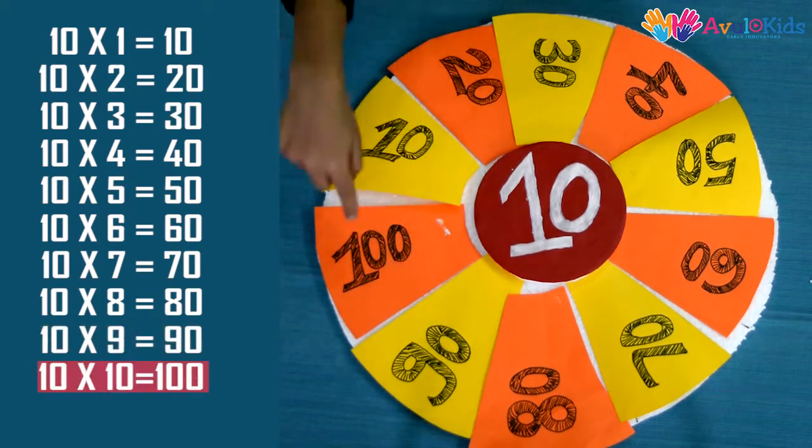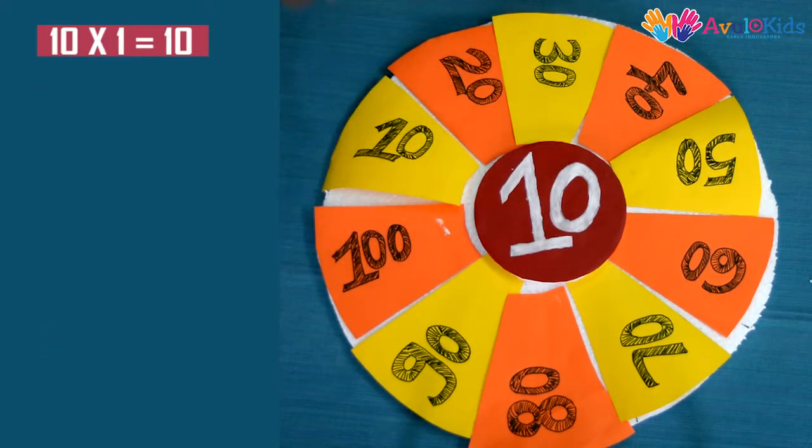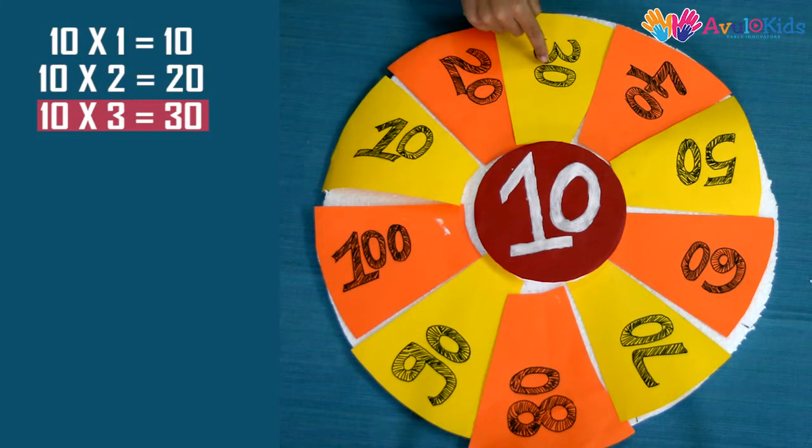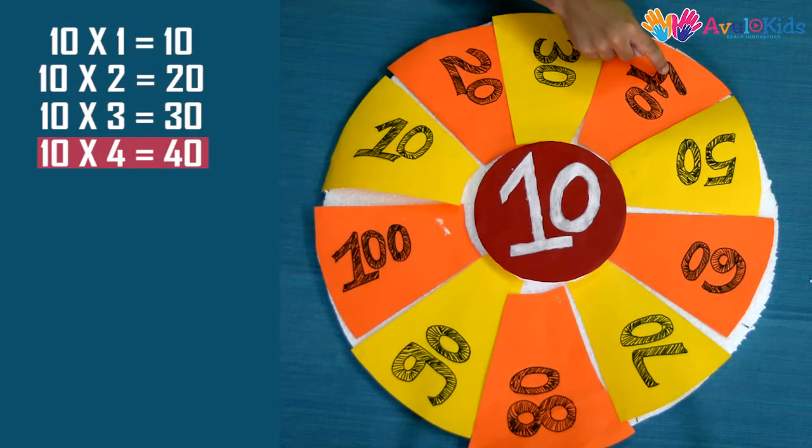10 times 8. And in 10, 10's a hundred. 10 ones are 10, 10 twos are 20, 10 threes are 30, and 10 fours are 40.